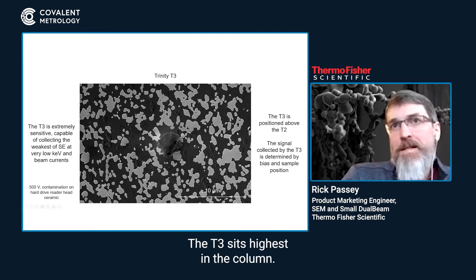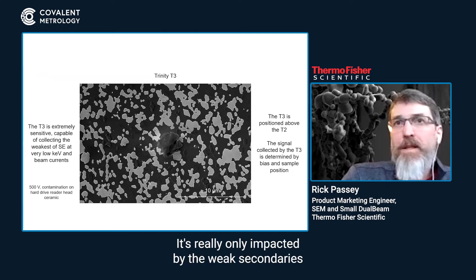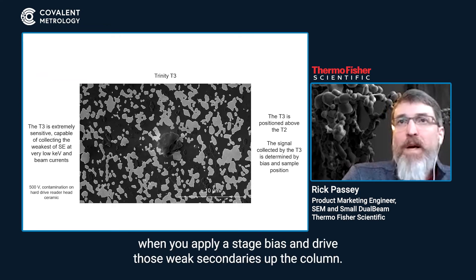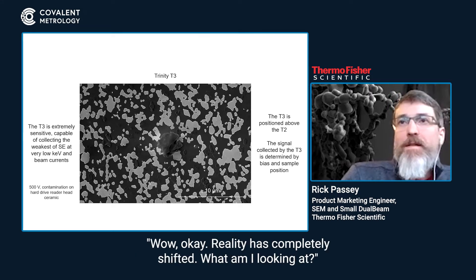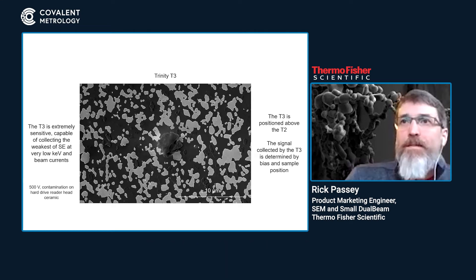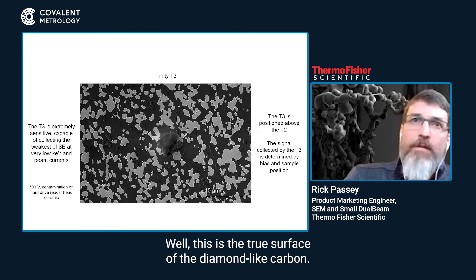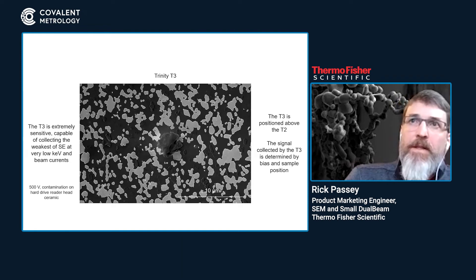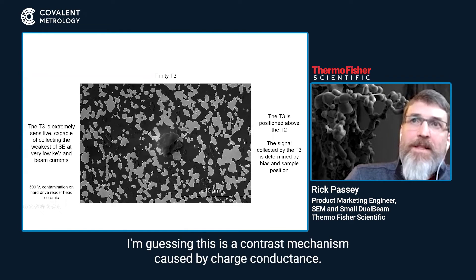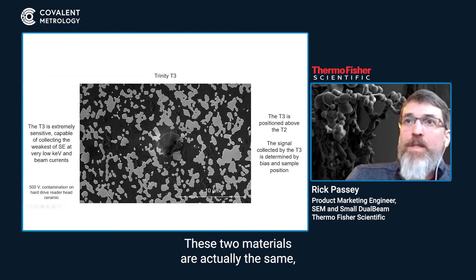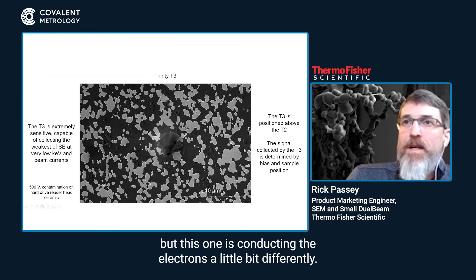The T3 sits highest in the column and is really only impacted by the weak secondaries when you apply a stage bias and drive those weak secondaries up the column. Now we're looking at this and reality has completely shifted — what are we looking at? Well, this is the true surface of the diamond-like carbon. There's some kind of material on top of the diamond-like carbon. My guess is this is a contrast mechanism caused by charge conductance, so these two materials are actually the same, but one is conducting the electrons a little bit differently.